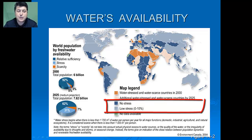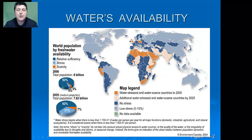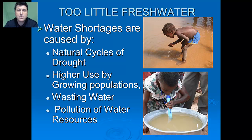Those in dark blue or light bluish gray will see no stress or very low stress. We're fortunate as a country that will be less stressed, but that doesn't mean drought or access won't be a problem, as we've seen in California. Water shortages can be caused by natural cycles of drought, higher use by growing populations, wasting water, or the pollution of water resources.